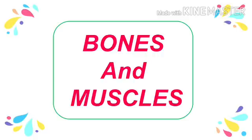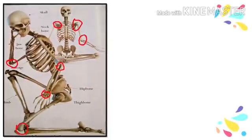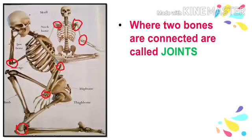Now we have learned about external organs, sense organs, and internal organs. Our body also has bones and muscles. See the picture — there is a human skeleton. The skeleton gives shape to the body and protects the internal organs. Just like a house needs the support of pillars or iron bars, our body also needs bones for support. The places where two bones are connected are called joints.